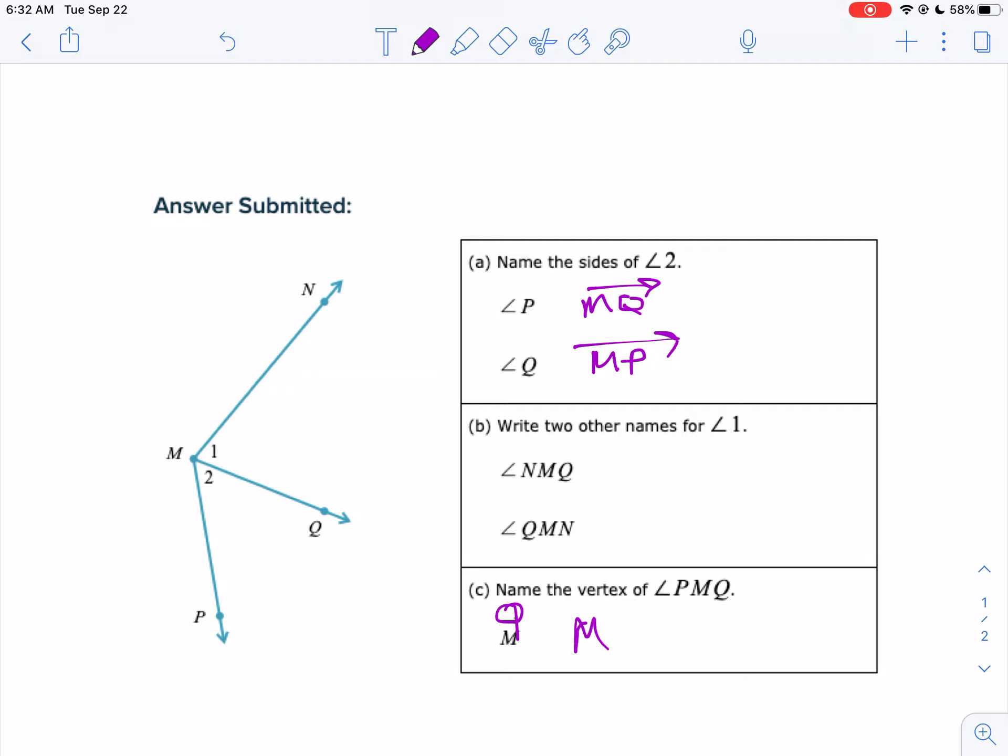You can't have a ray with one letter anyway, so it's just M. So let's try redoing this quiz and see how we do.